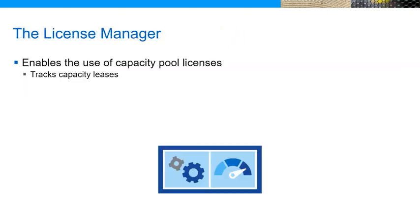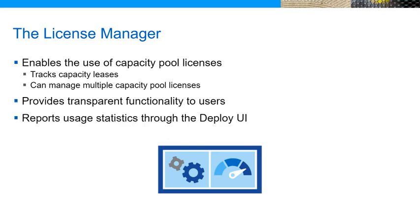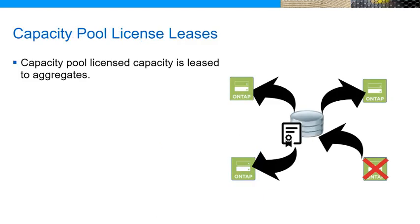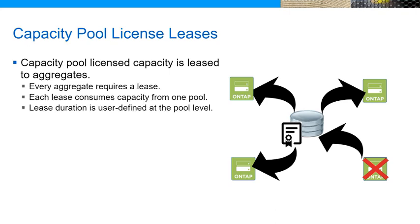To manage flexibility, each ONTAP Select deploy VM incorporates a license manager service that automatically keeps track of allocated capacity whenever a node creates or modifies an aggregate. The license manager service can manage multiple capacity pool licenses at the same time. For administration purposes, the license manager service reports pool usage information through the deploy UI. To track capacity, the license manager service uses the concept of leases. Each lease enables the node to consume capacity for a specific aggregate for a certain duration. The duration is user-defined at the pool level and can vary between one hour and seven days.